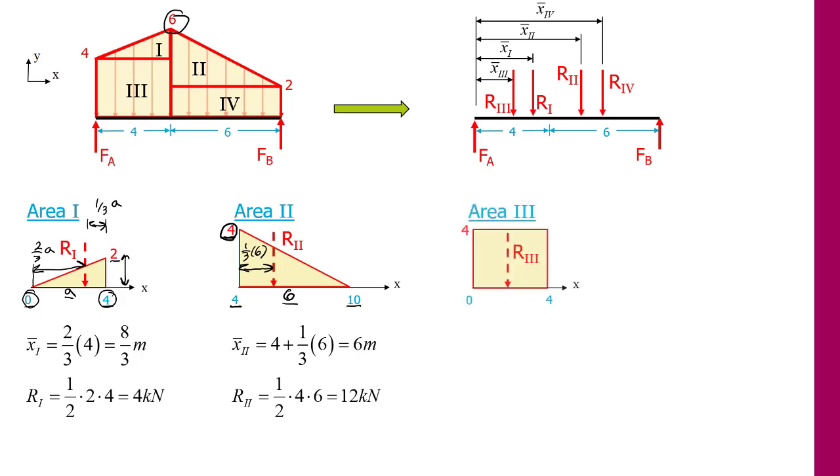Moving on to the third area, we now have our rectangle here has a height of 4 and a base of 4. So this is 4 and this is 4, and it starts at x equals 0. So our resultant force will be in the middle of this rectangle, which will be 1/2 of 4. So we get that x-bar 3 is 2 meters, and the reaction force itself is going to be the base times the height, so 4 times 4, which gives us 16 kilonewtons.